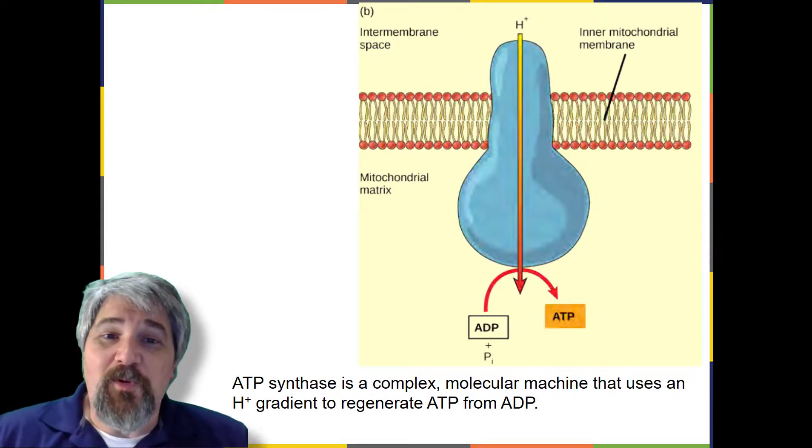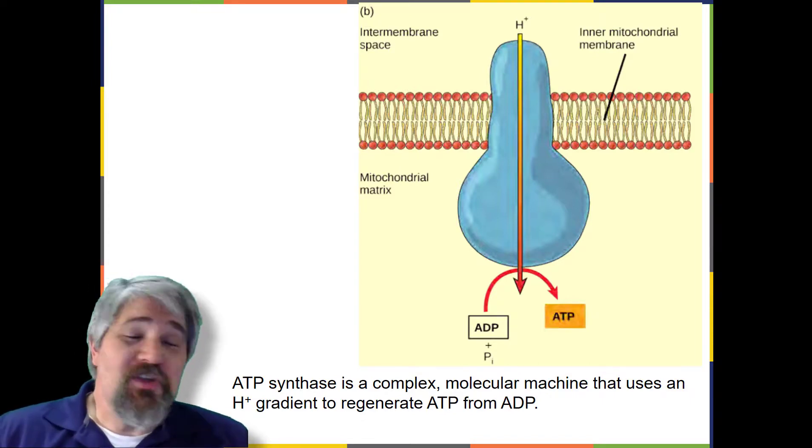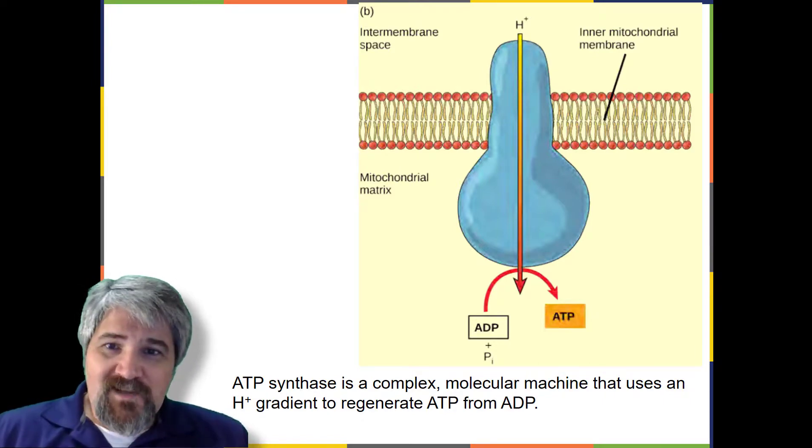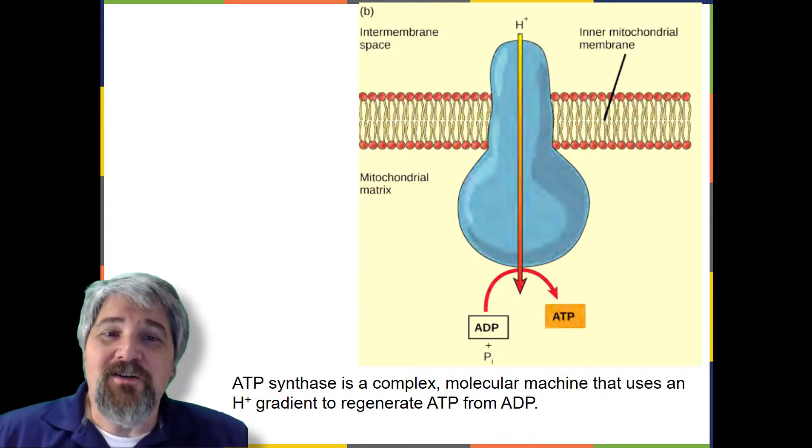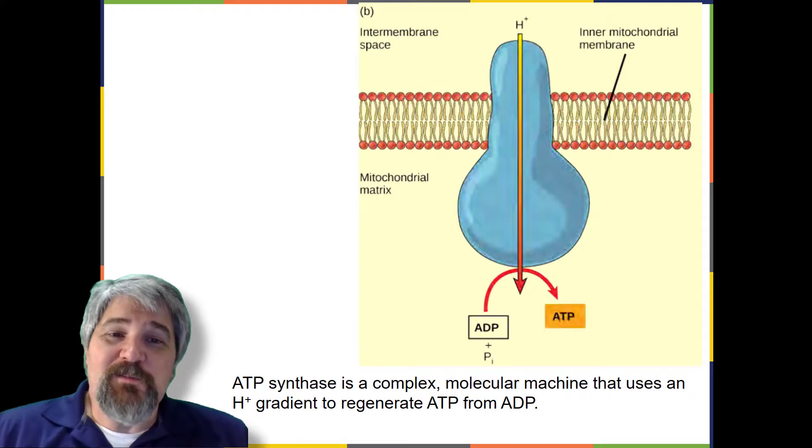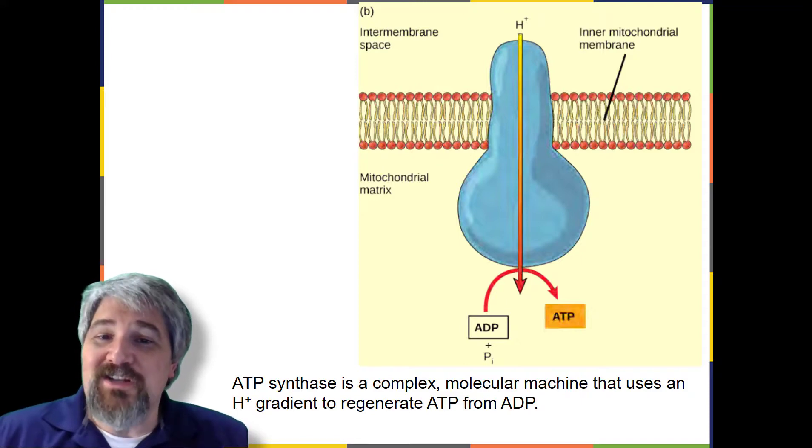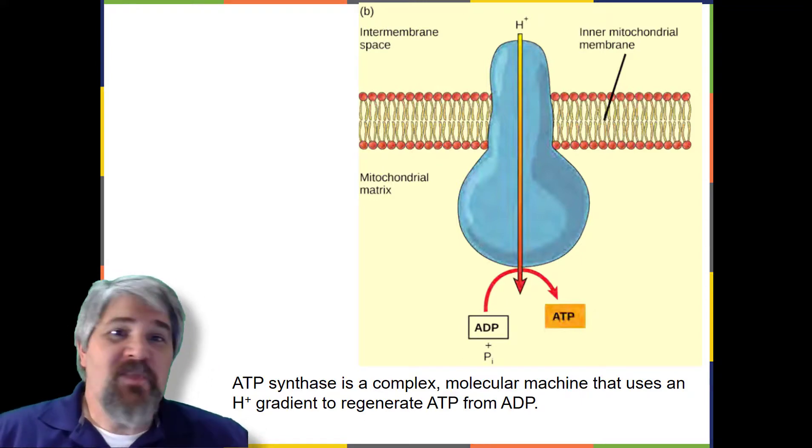Hydrogen ions diffuse through the inner membrane through an integral member protein called ATP synthase. Now, this is just the cartoon. I'm going to show you a better, much better video of ATP synthase in action. This complex protein acts as a tiny generator turned by the force of the hydrogen ions diffusing through it down their electrochemical gradient from the intermembrane space where there are many mutually repelling hydrogen ions to the matrix where there are few. The turning of the parts of this molecular mechanism regenerates ATP from ADP. This flow of hydrogen ions across the membrane through ATP synthase is called chemiosmosis. All right, let's see if I can get this video to work.